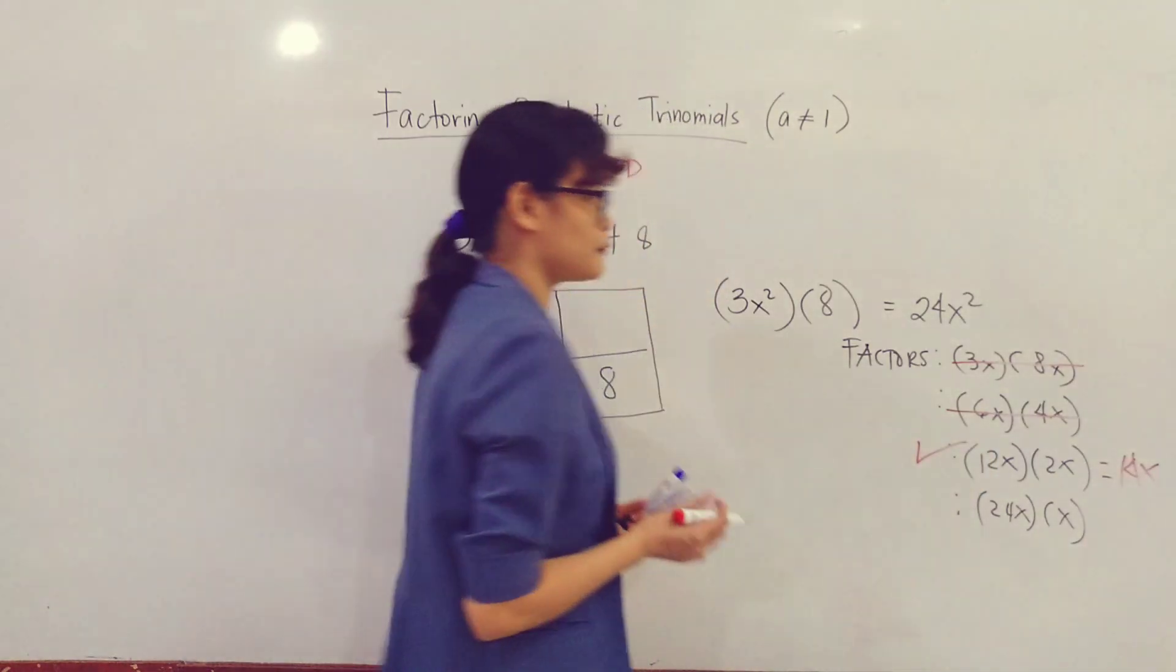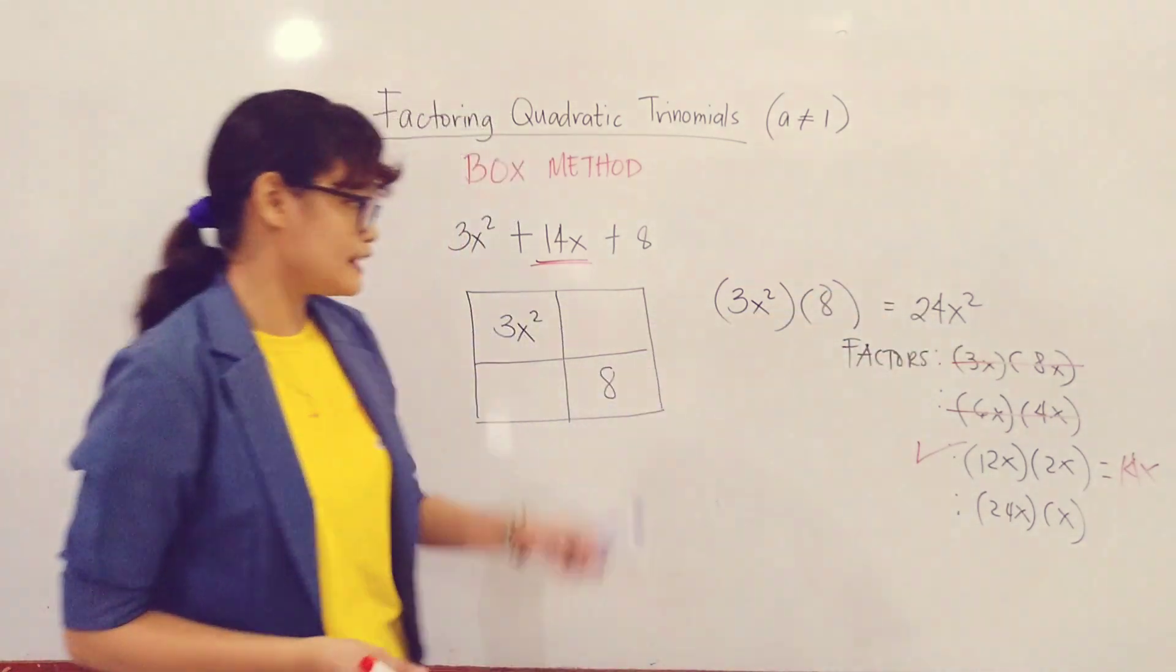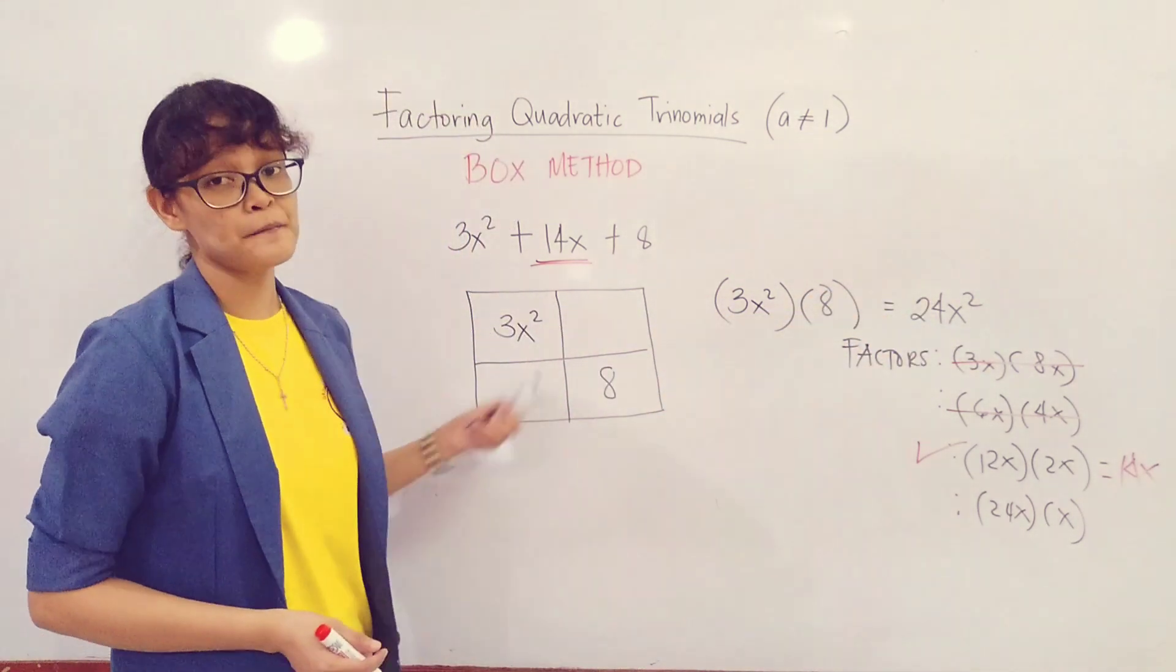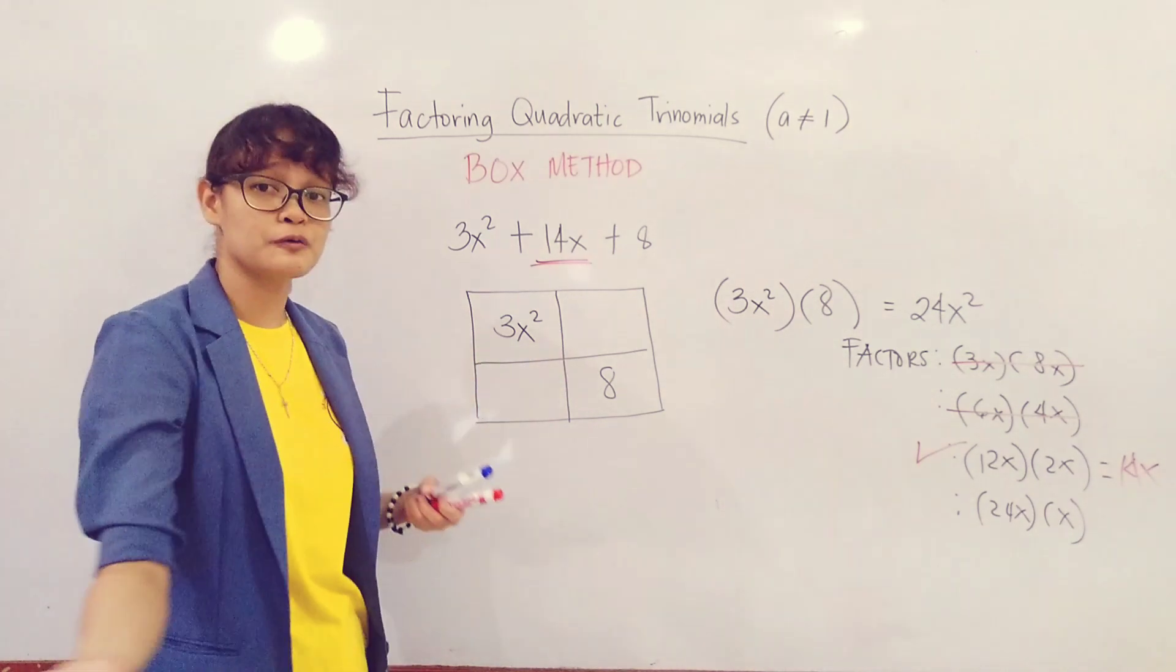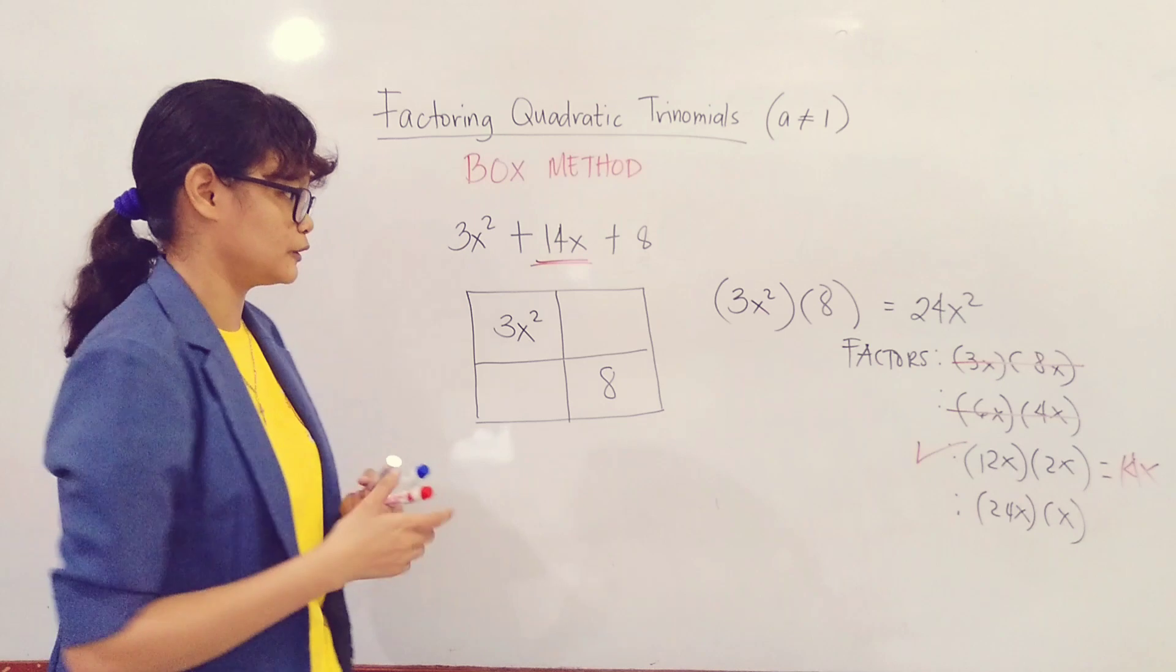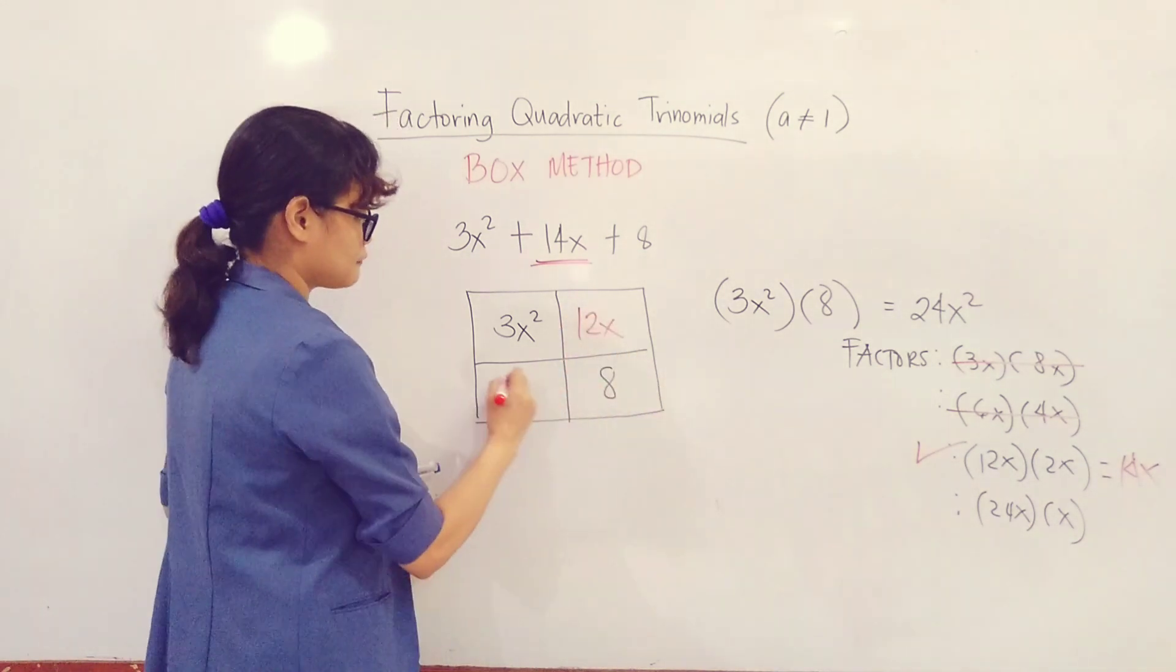After finding the factors, we add them. Their sum should be 14x. Let's check: 3x + 8x is just 11x, so it's not included. Next, 6x + 4x is just 10x, so it's not included. You have 12x + 2x, which equals 14x. That means these are the factors of 24x² we'll use.